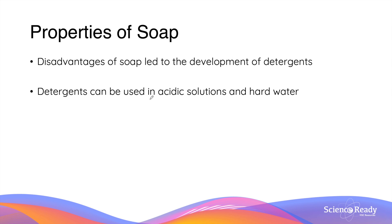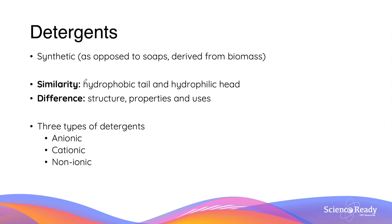The disadvantages of soap led to the development of detergents. Detergents are also cleaning agents that overcome the limitations of soap so that they can be used in acidic solutions and with hard water. Detergents are synthetic substances, as opposed to soaps which are derived from natural sources, also known as biomass. There are three different types of detergents: anionic, cationic, and non-ionic detergents.